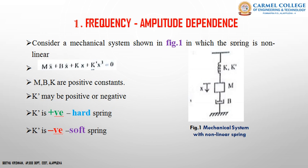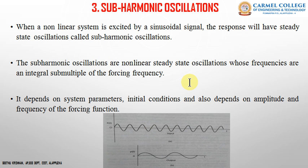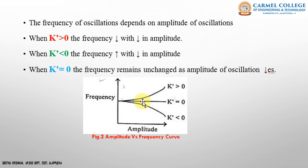The spring may be hard or soft depending on the value of k'. If k' is positive, the spring is hard; if k' is negative, it is a soft spring. The frequency of oscillation depends upon the amplitude of oscillation. In a nonlinear system, if k' = 0 (linear spring), the frequency remains constant regardless of amplitude. But for a nonlinear spring with k' > 0 (hard spring), the frequency decreases with decreasing amplitude.